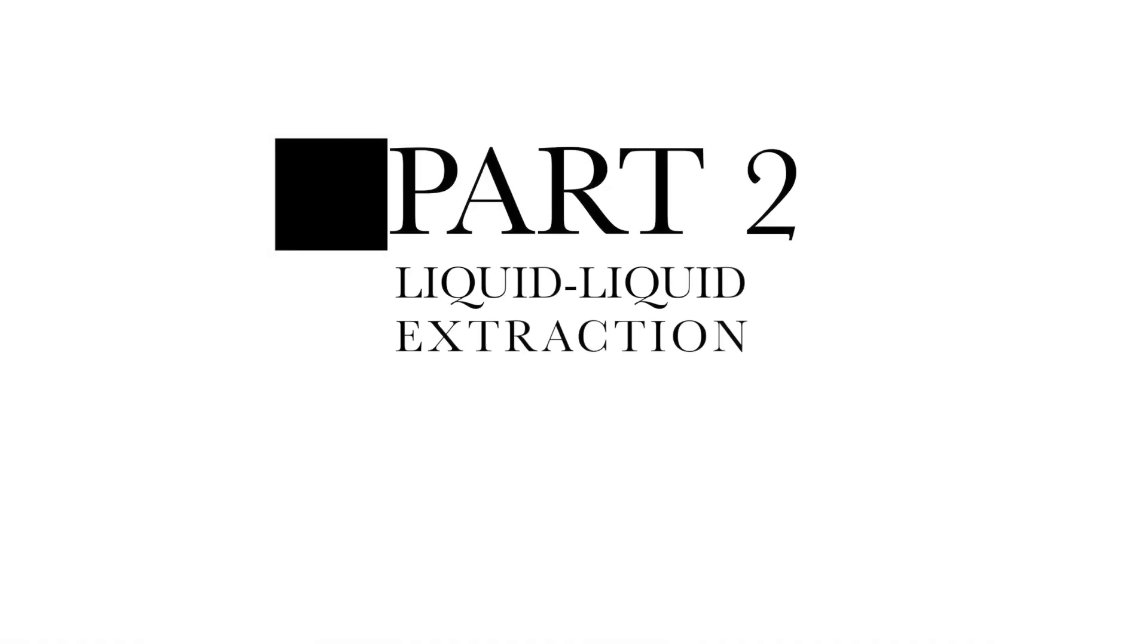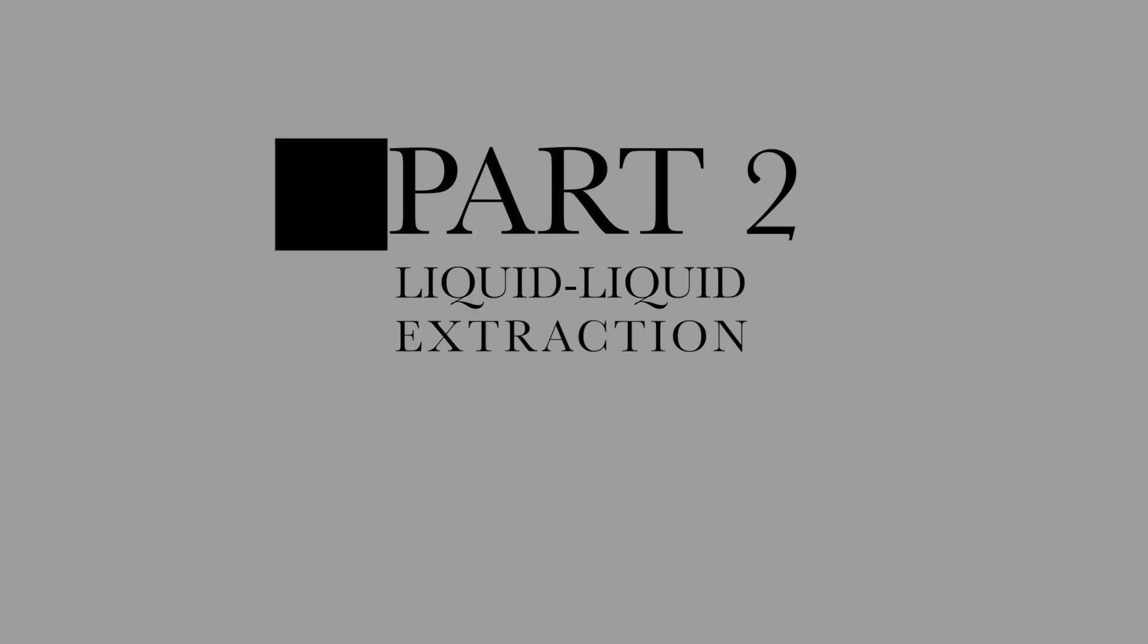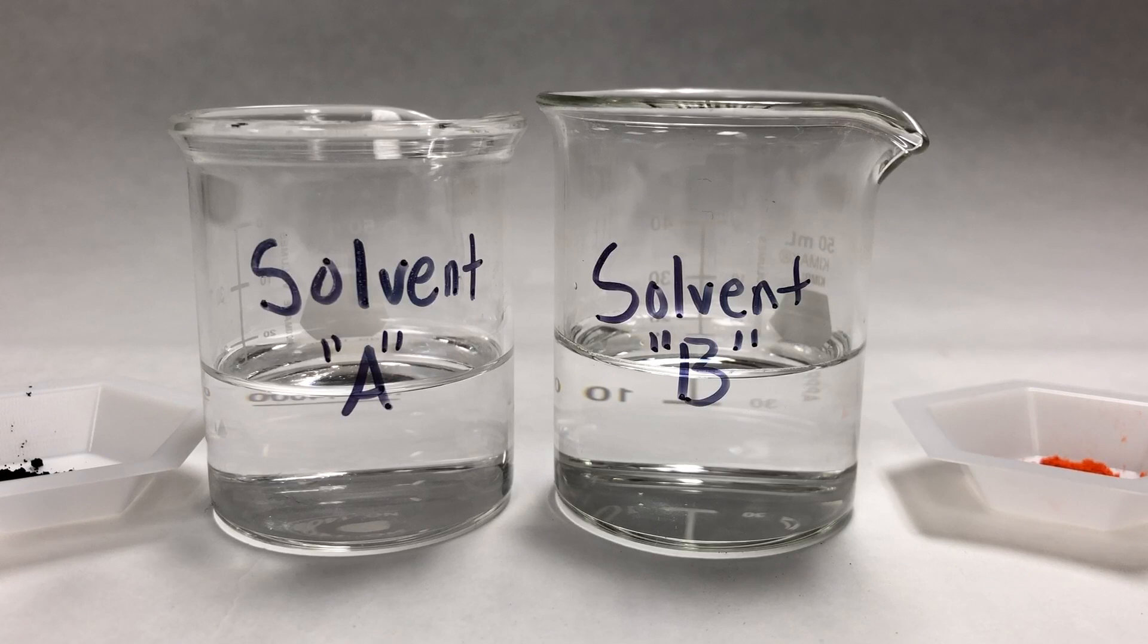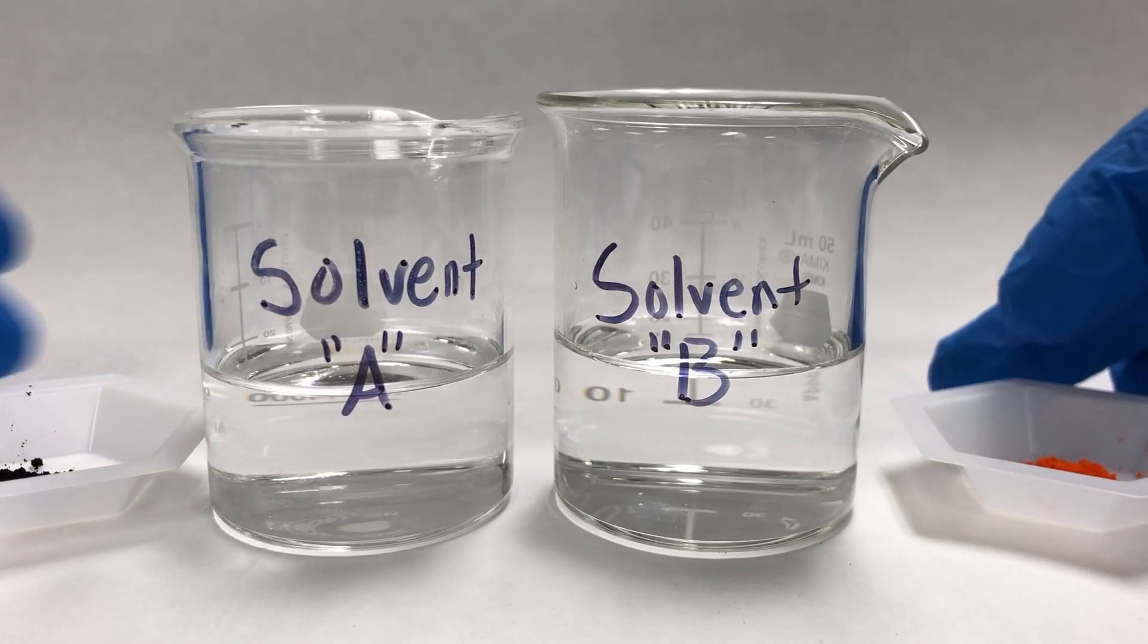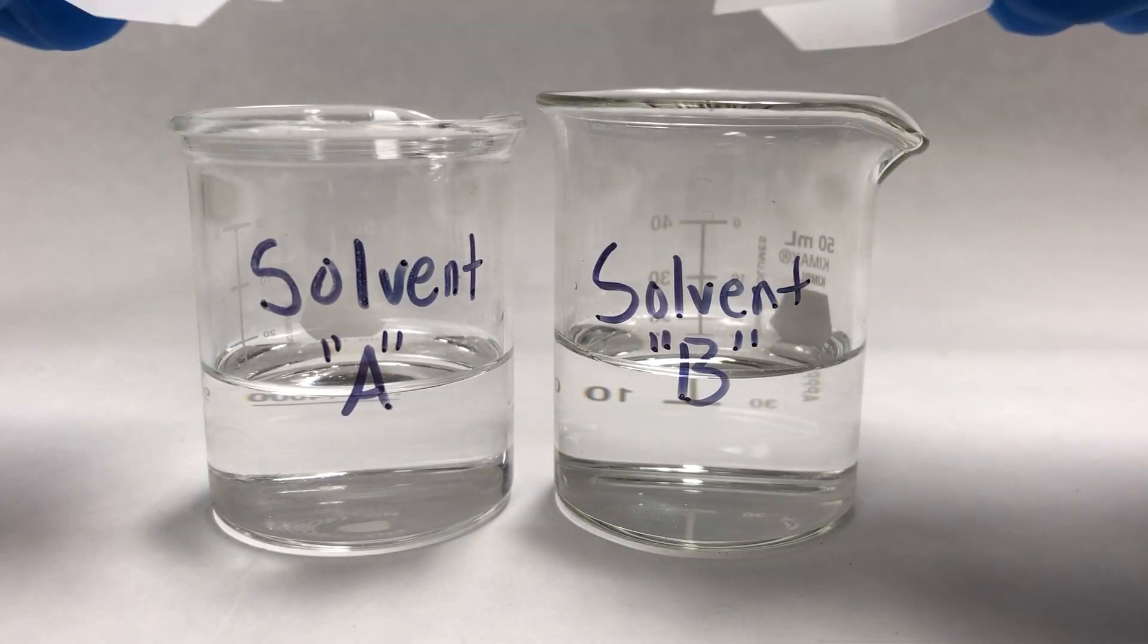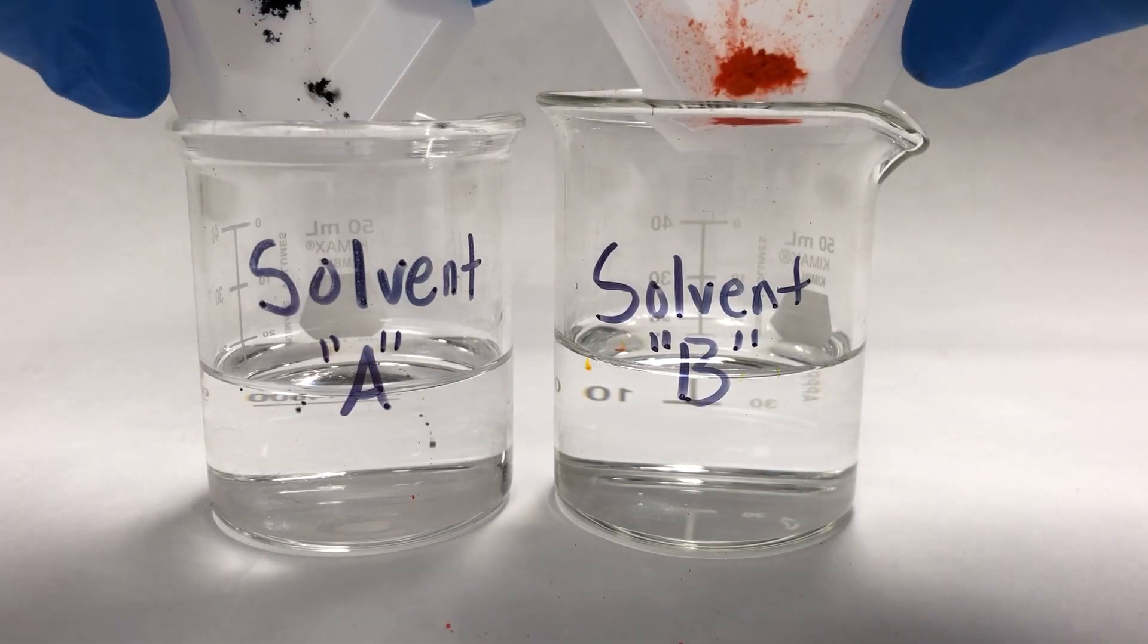For the next part of the video, I will show you how to separate a mixture of two liquids. First, let's go over some vocabulary. A solvent is a liquid that is used to dissolve other substances, and a solute is a substance that can be dissolved in a solvent.